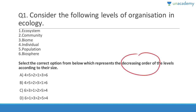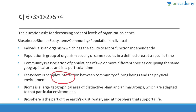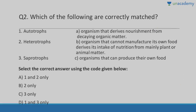The order from largest to smallest is: biosphere, biome, ecosystem, community, population, and finally individual. The answer is C. Individual is an organism; population is a group of organisms; community is an association of populations of two or more species; ecosystem is complex interaction between a community of living beings and the physical environment; biome is a very large geographical area of distinctive plant and animal groups adapted to a particular environment; and biosphere is the part of Earth's crust that supports life. Please remember this order — it is very important.